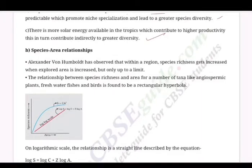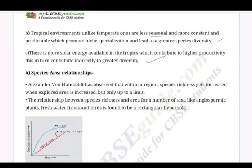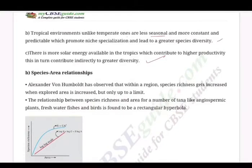Ecologists and evolutionary biologists have proposed various hypotheses for greater biodiversity in the tropics. One important hypothesis is speciation — speciation is generally a function of time. Unlike temperate regions, which were subjected to frequent glaciations in the past, tropical latitudes have remained relatively undisturbed for millions of years and thus had a long evolutionary time for species diversification.